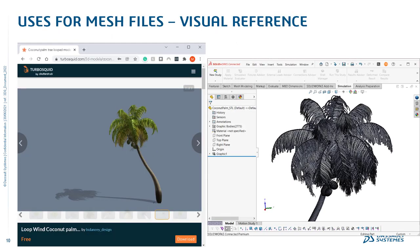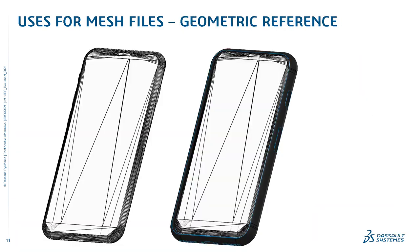One common question is what do you do with mesh files once you've brought them into SOLIDWORKS? One thing you can do is use the mesh file as a visual reference to add context behind a model. In this example, I downloaded a coconut tree from TurboSquid — an online repository of files used in rendering and animation. I imported it into SOLIDWORKS and can show my SOLIDWORKS model next to that coconut tree as a visual reference. Another use is as a geometric reference.